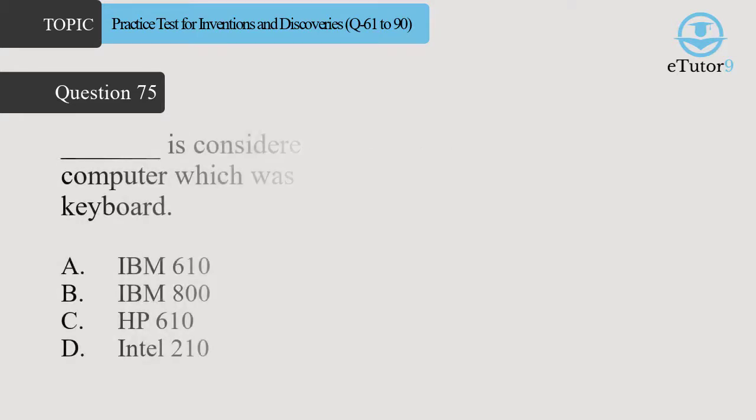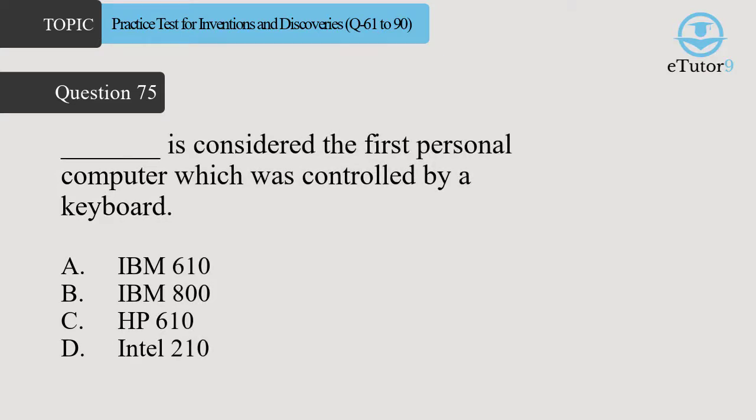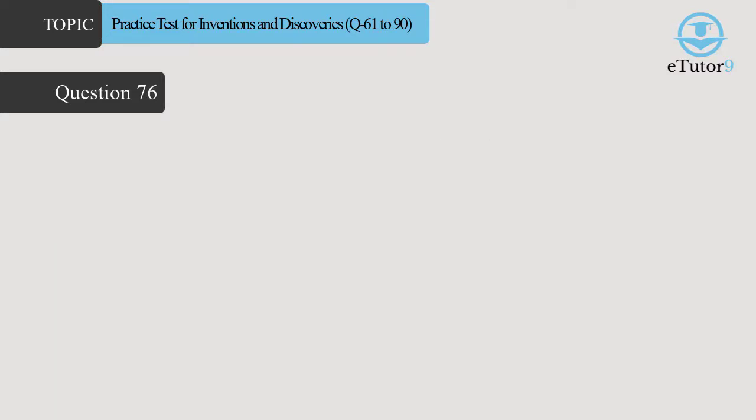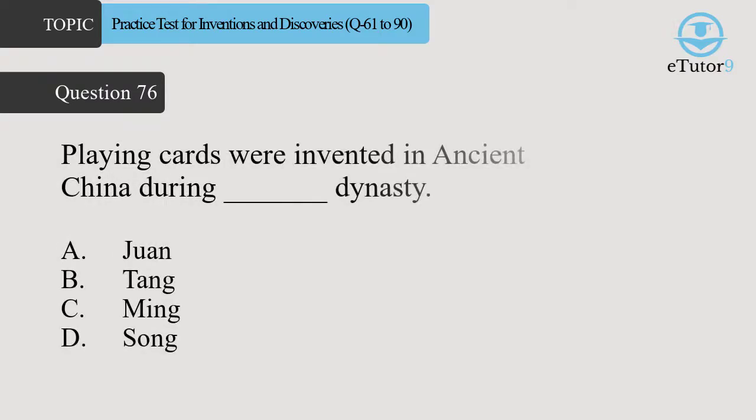Question 75. Dash is considered the first personal computer, which was controlled by a keyboard. Answer is A. IBM 610. Question 76. Playing cards were invented in ancient China during the Daesh dynasty. Answer is B. Tang.